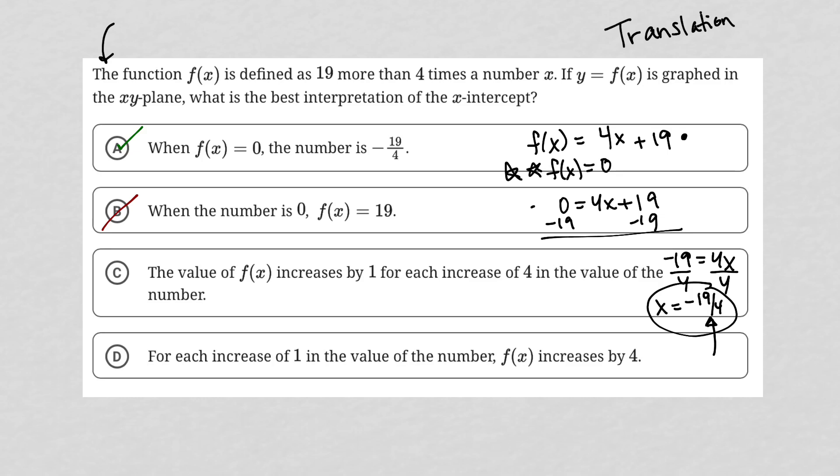Choice C, the value of f of x increases by 1 for each increase of 4. No. I mean, that sounds like a slope. And even then, it seems like the slope is incorrect. At any rate, that's not our x-intercept. So C is gone.